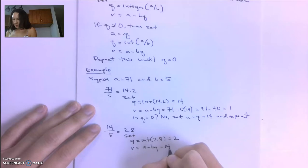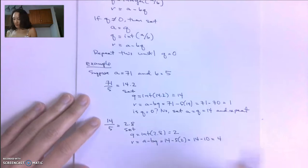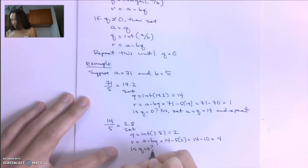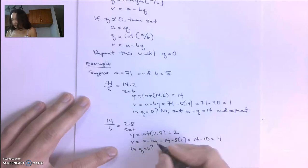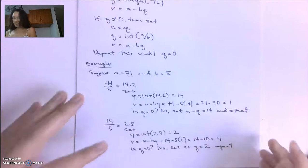And then we're going to set R equal to A minus BQ, which is 14 minus 5 times 2. That's 14 minus 10. So our remainder at this step is 4. And then we ask ourselves, is Q equal to 0? Q is 2, so no. Then we're going to set A equal to Q, which is 2, and repeat.